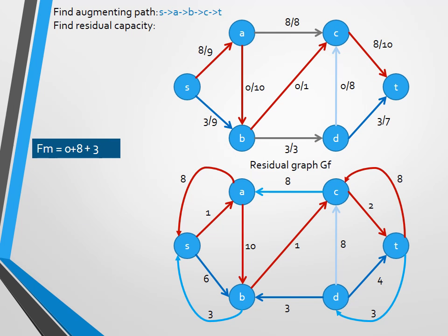And we go looking for yet another augmenting path, this time S-A-B-C-T. We look for the residual capacity in the residual graph, which is 1. We update the maximum flow and the flow in the flow network. Then, we update the residual graph, still the same way, adding back edges of 1 and updating the capacity for each edge.